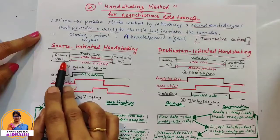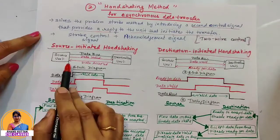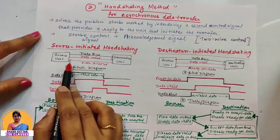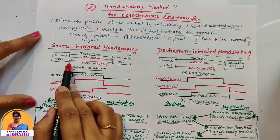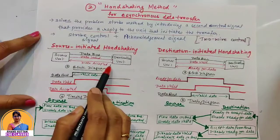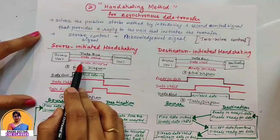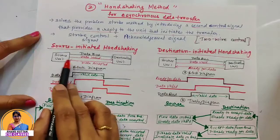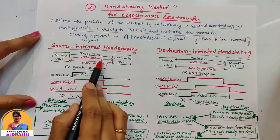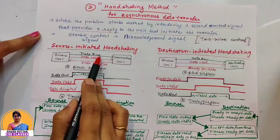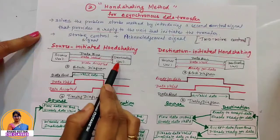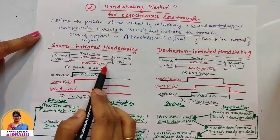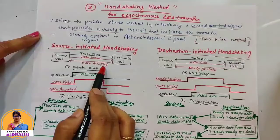After getting the data accepted signal, the source knows that the destination has received the data. At this point, both signals need to be disabled. The source will disable the data valid signal, and whatever data is on the bus will be invalidated. Next, the destination unit will disable the data accepted signal.